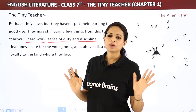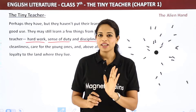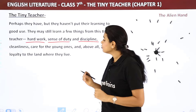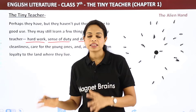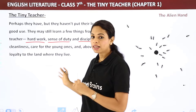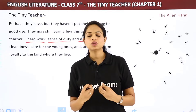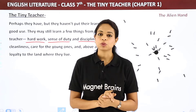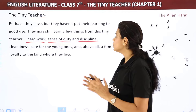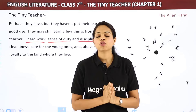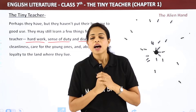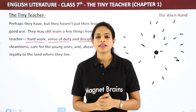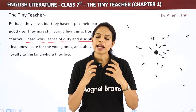Cleanliness is another thing we can learn from ants. Care for the young ones — ants take care of their loved ones in a completely disciplined, organized way with their whole heart. And above all, loyalty to the land where they live — for ants, their ant hill is the most important place. Similarly, we should be loyal to our country.